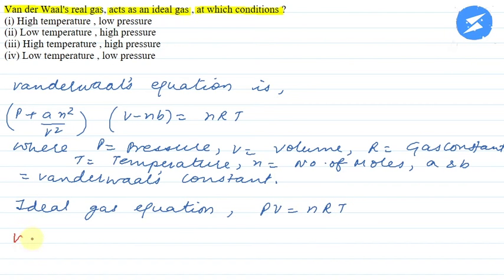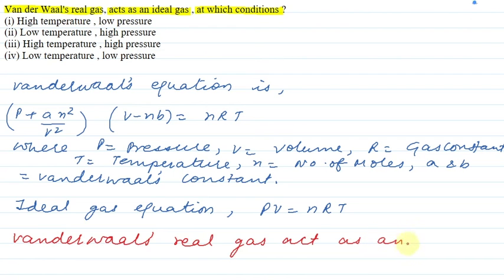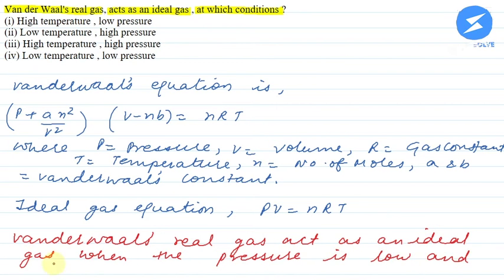Now, when does Van der Waals gas, the real gas, act as an ideal gas? When the pressure is low and the temperature is high.